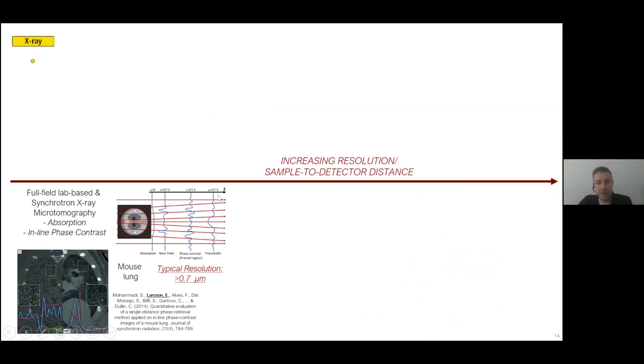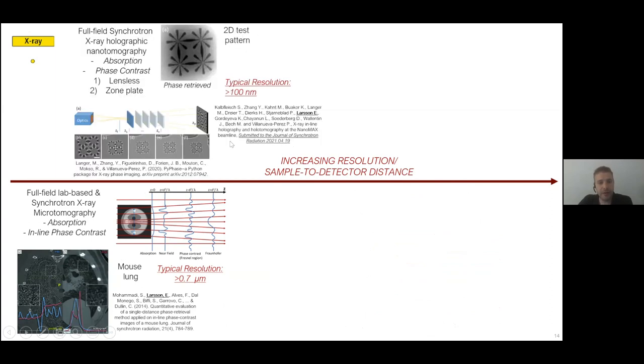If we switch to imaging with real x-rays, we have x-ray microtomography with a typical resolution of 0.7 microns. We can image both in absorption and phase contrast, and you get more prone to detecting small features with this technique. There are also techniques such as at NanoMAX, the full-field x-ray holographic nanotomography, which is a lensless technique. The projection images you acquire are basically blurred, and that depends on the distance from the sample to the detector.